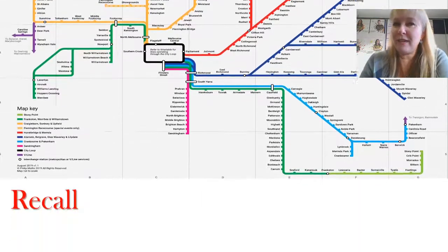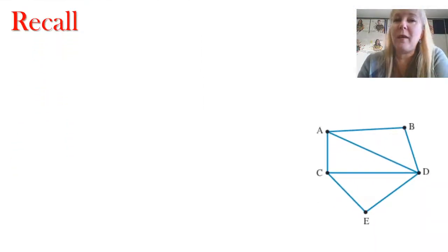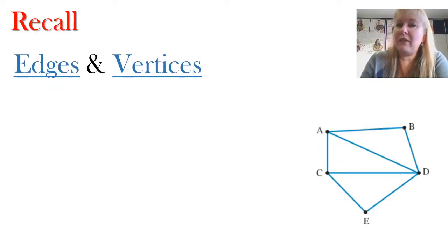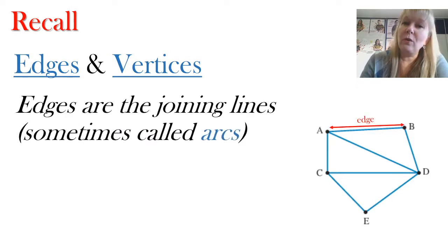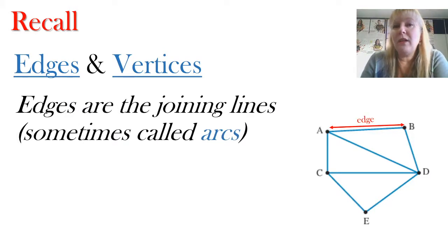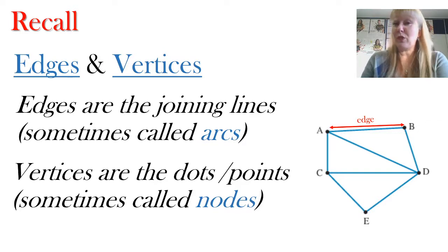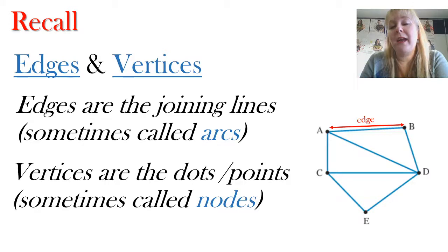Let's get started with a brief recap on some vocabulary from our last video, which was the introduction to networks for Year 12. We looked at some new vocabulary on edges and vertices. Edges are our straight lines that join two points on a network, and those points are called vertices. We're going to be using this language — edges and vertices — in today's video. If you haven't watched the previous video, it would be a good idea to go back and have a look.